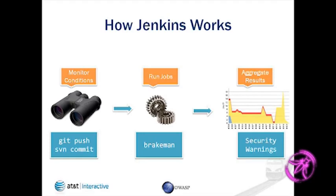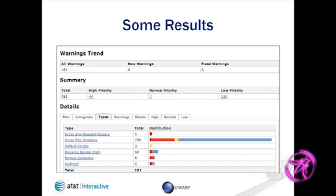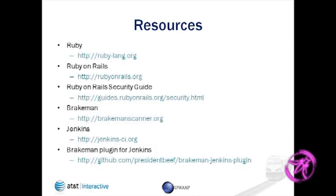We have a plugin that integrates with another plugin to give you nice graphs. It'll run Brakeman against the code, grab all the warnings, and you'll get these nice graphs showing warnings, what type of warnings, the distribution of high, medium, and low. If you want to use Brakeman, this is how easy it is — if you're a Ruby person, install the gem, go to your Rails application, and run brakeman. There are a lot of other options you can add, but if you just want to try it out, this is all it takes.